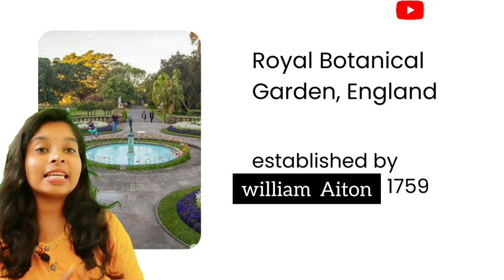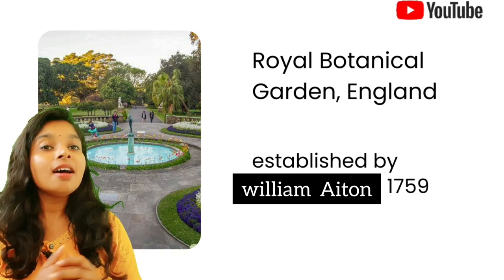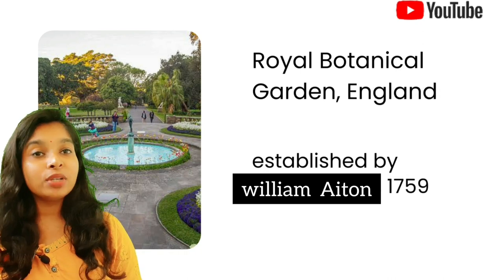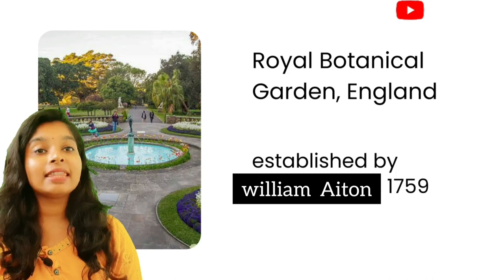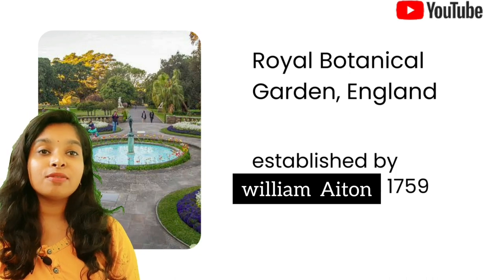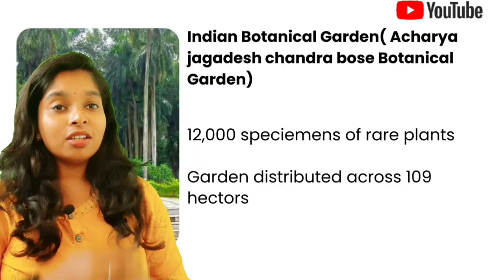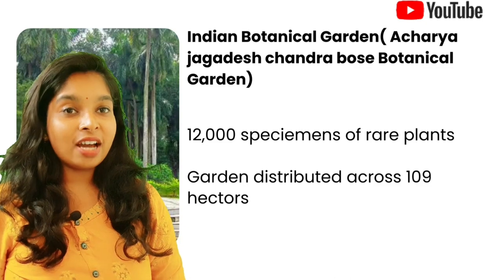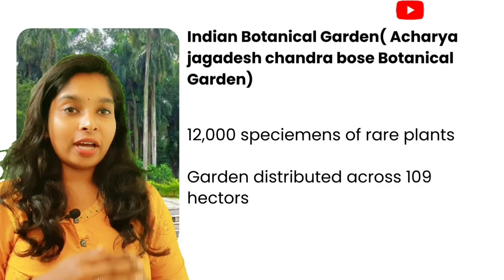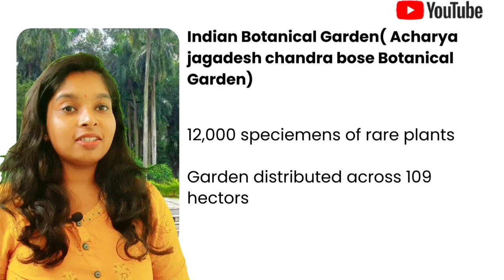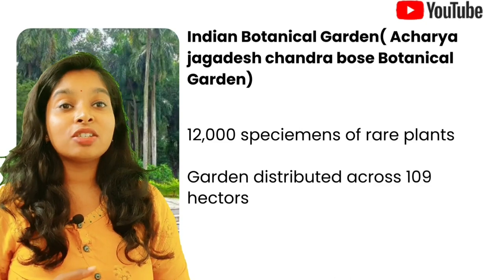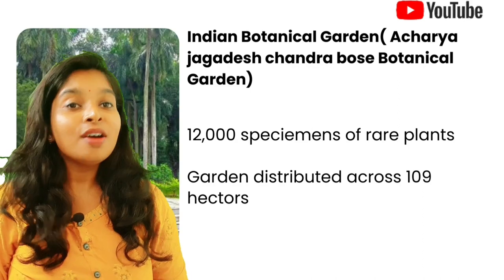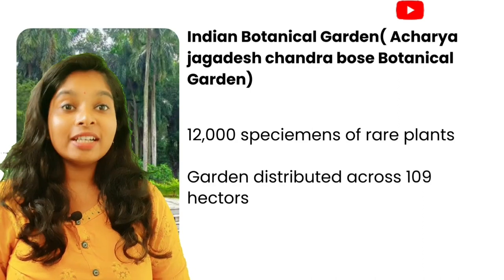The largest botanical garden in the world is the Royal Botanical Garden, located in England, established in the year 1759. The largest botanical garden of Asia is the Indian Botanical Garden, also called the Acharya Jagadish Chandra Bose Botanical Garden, which is located in Kolkata.